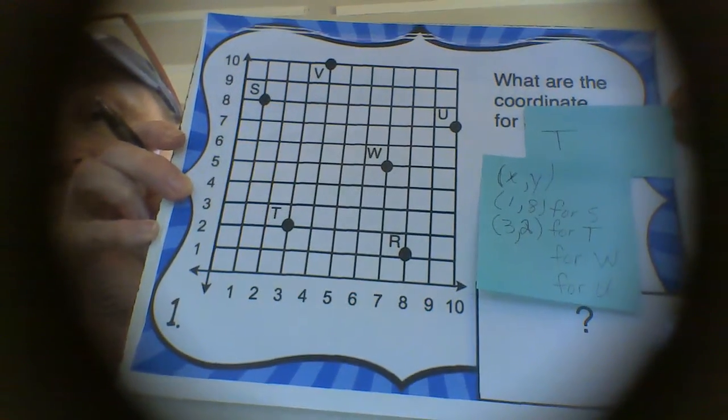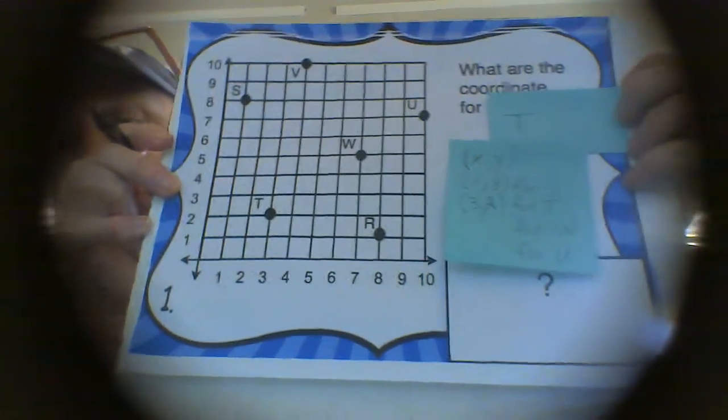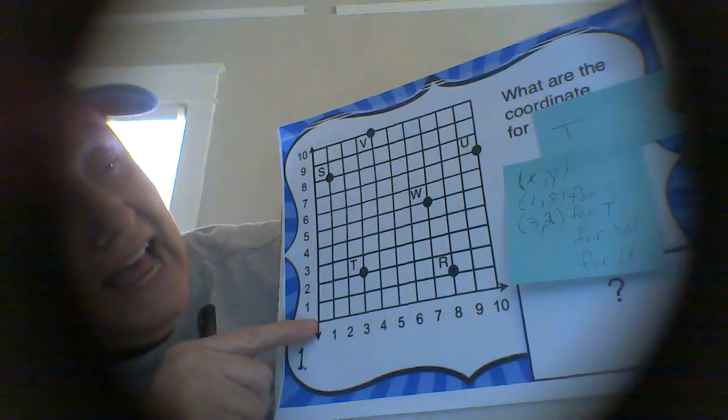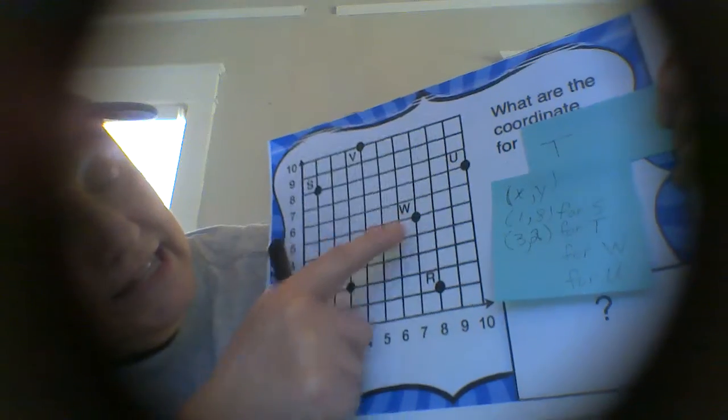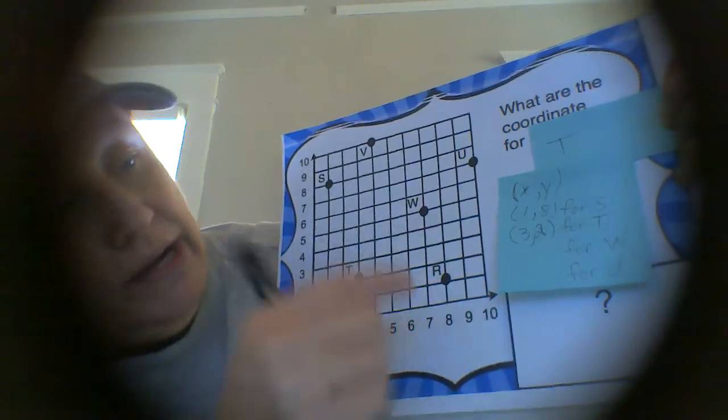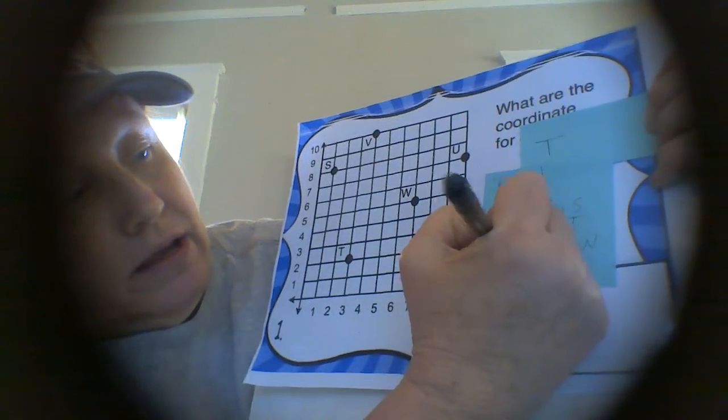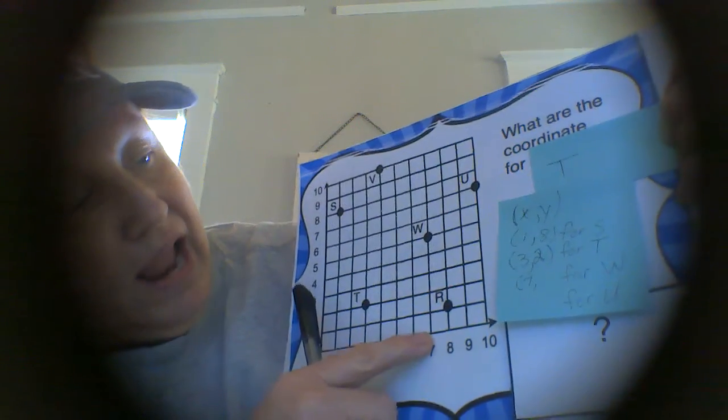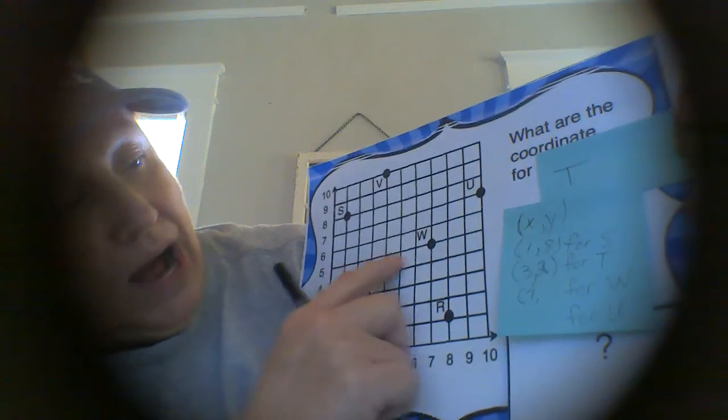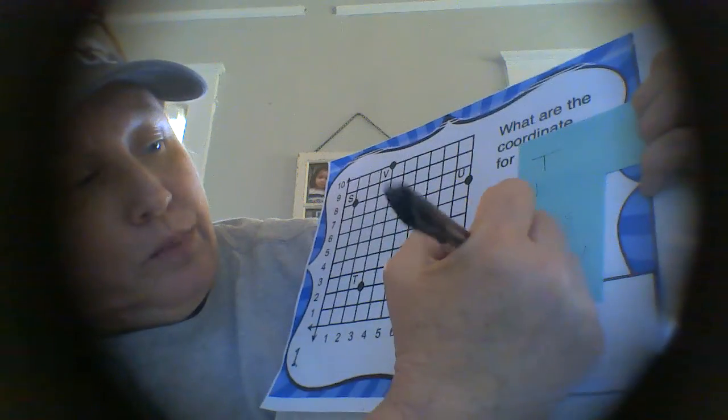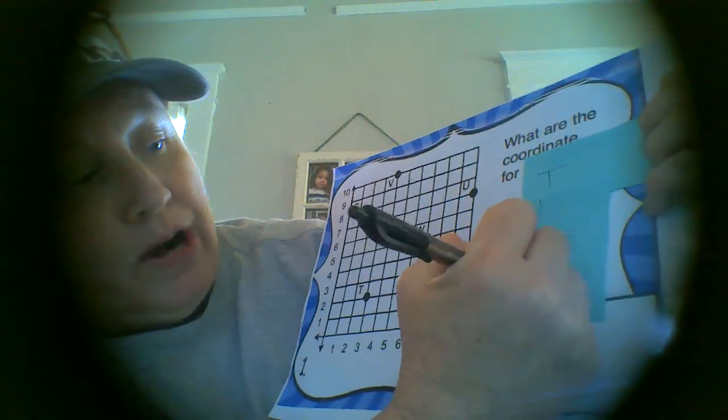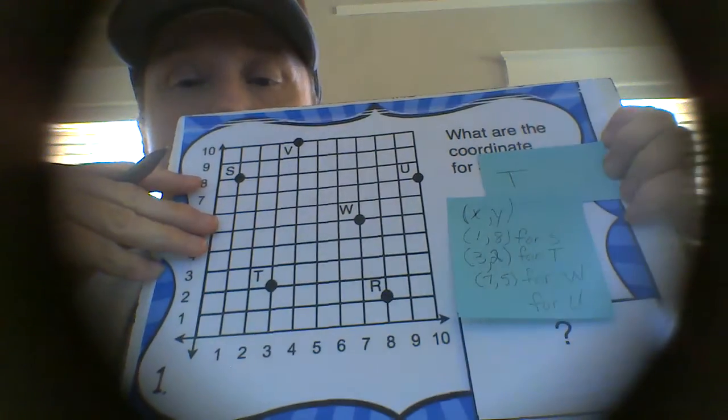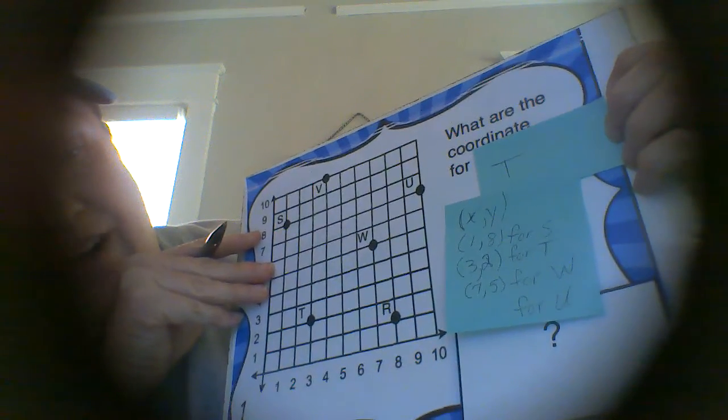And now let's go over what the coordinate is for W. So once again, starting at the x-axis, going across, we see the W there. We know our x will be 7. And then going up, our y will be 5. So our ordered pair for W would be 7, 5.